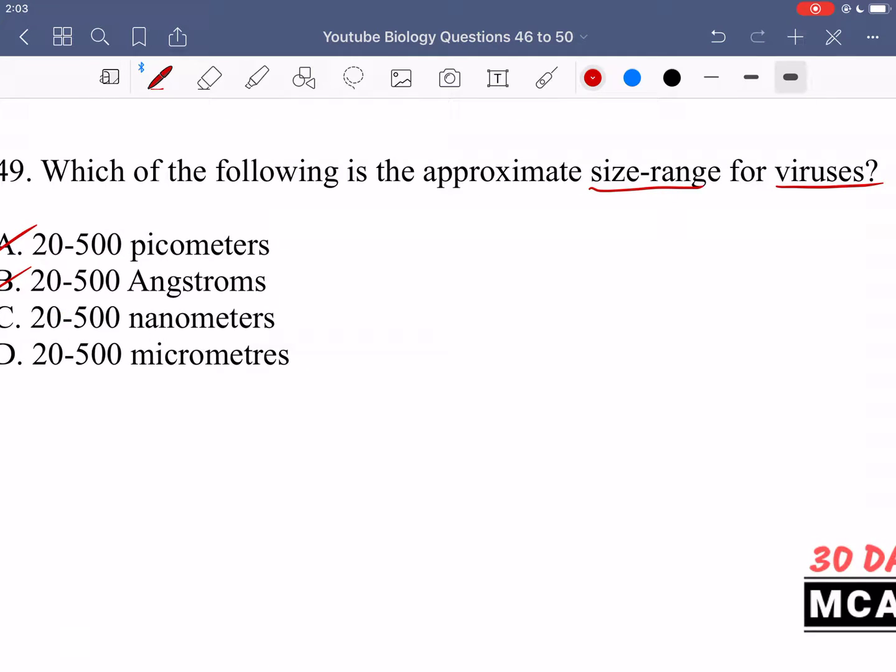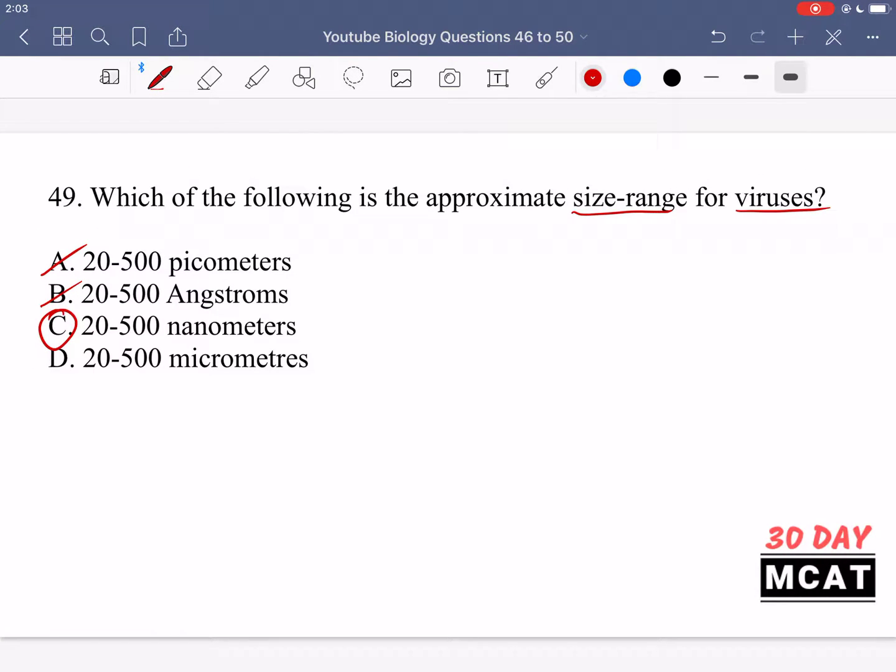Option C would be correct. Option C, nanometers. Yes, that one makes sense. So, globular proteins, they can reach sizes up to, for example, one nanometers. So if a protein can be at least a nanometer, like if that is one range which they can enter into, and you know that viruses contain proteins, for example, like an RNA transcriptase, then you should know that the virus definitely has to be at least bigger than this. So, 20 to 500 nanometers, yes, we can reasonably say that this is an approximate size range for viruses. This is fine.